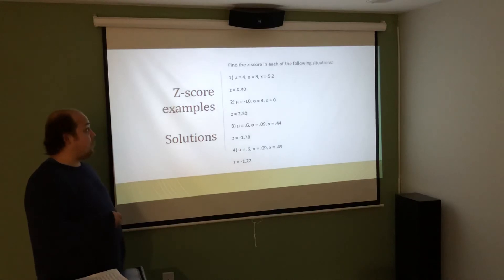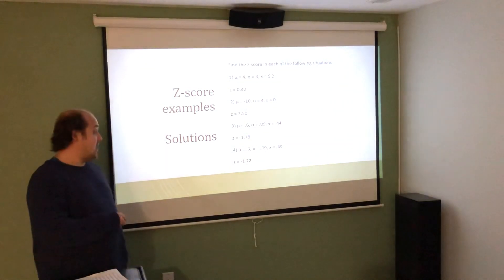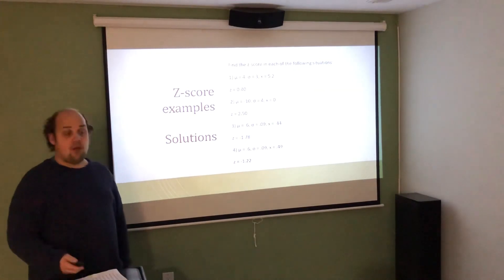Notice that if I wanted to interpret these, the first one would be 0.4 standard deviations above the mean. The second one would be 2.5 standard deviations above the mean. The third one would be 1.78 standard deviations below the mean, below because of the negative. And the final one would be 1.22 standard deviations below the mean, again, below because of the negative.